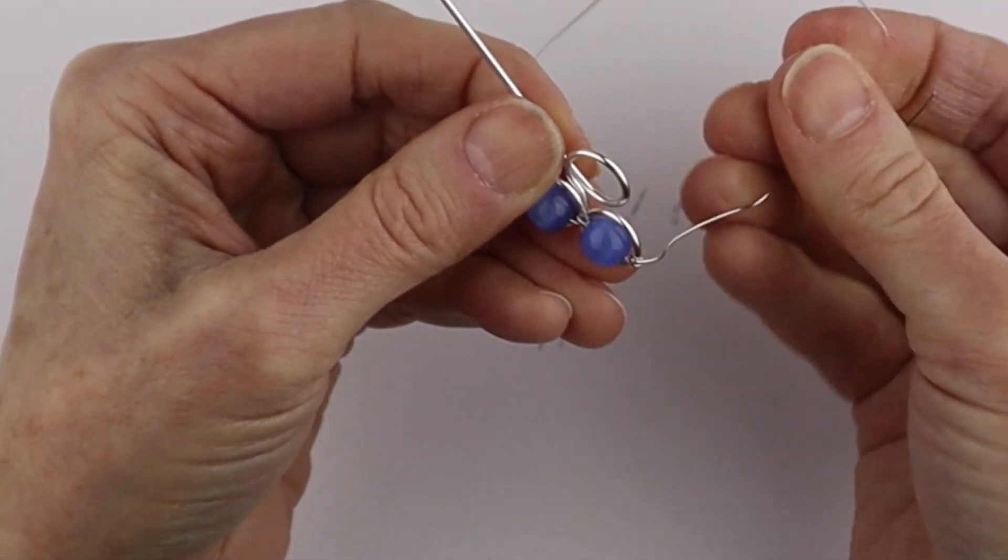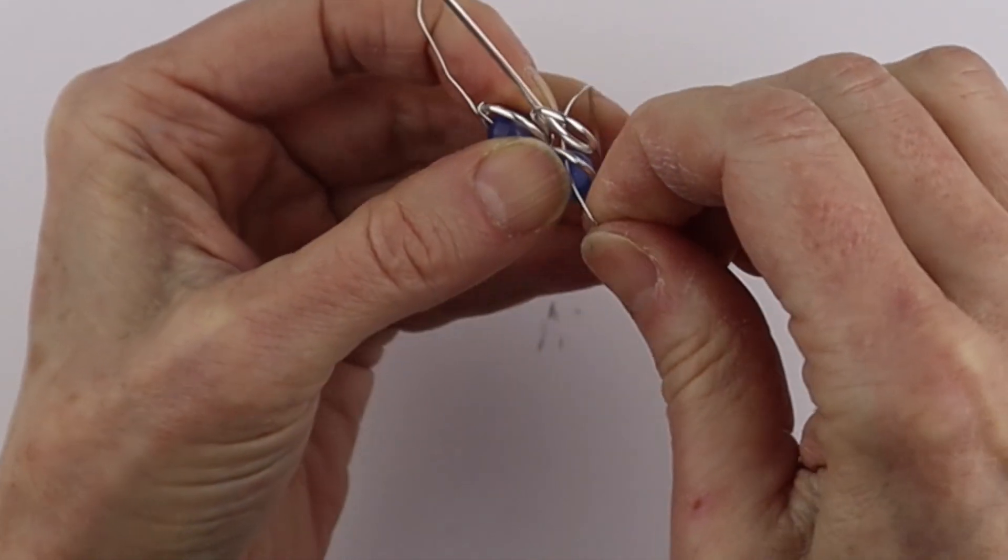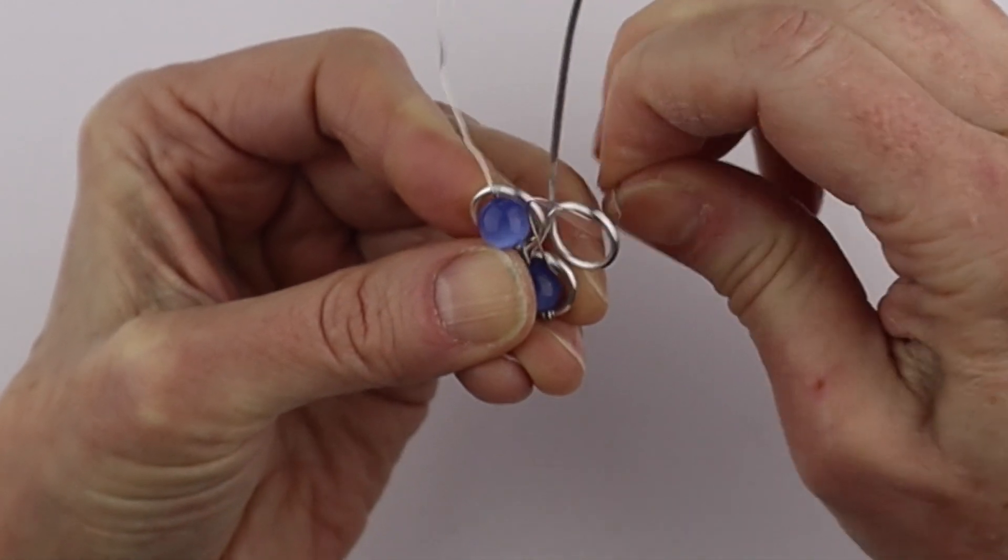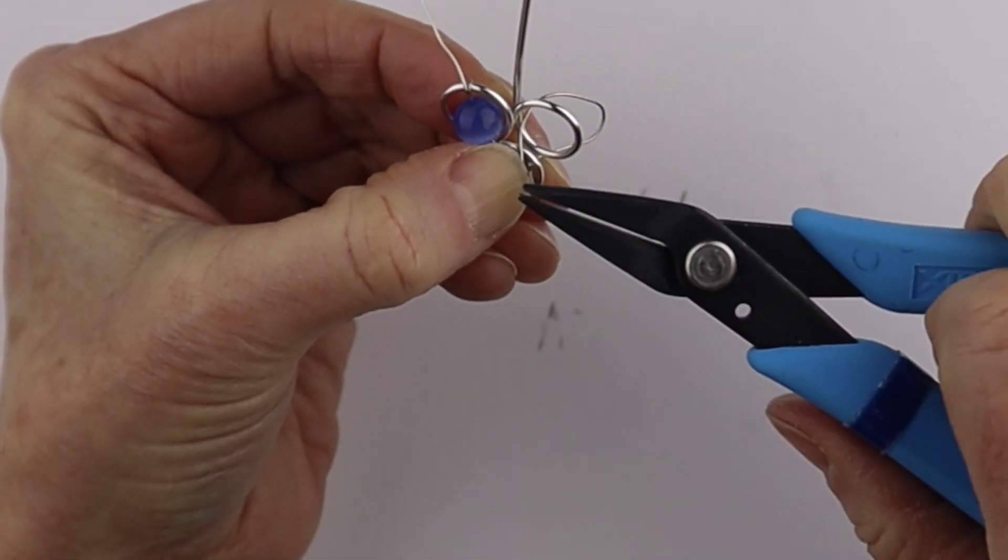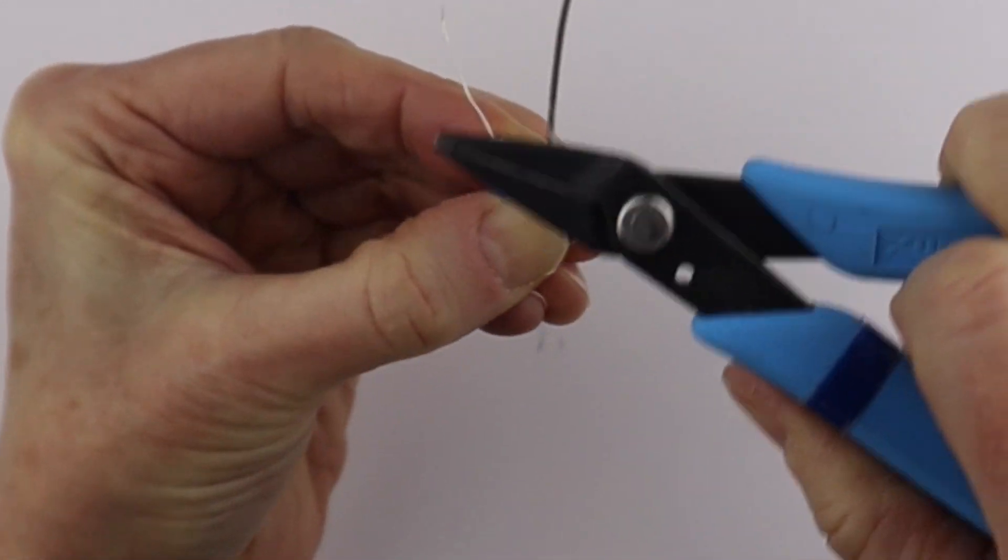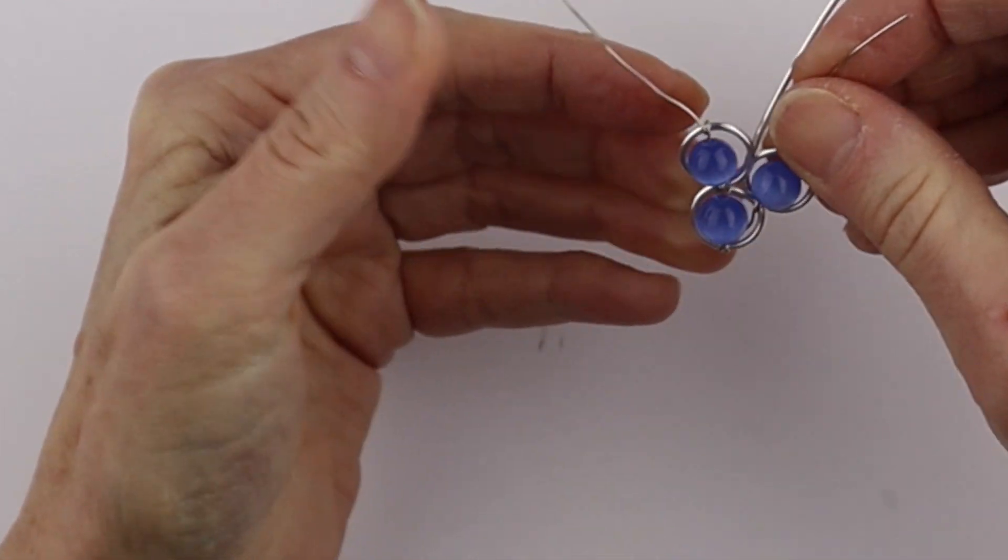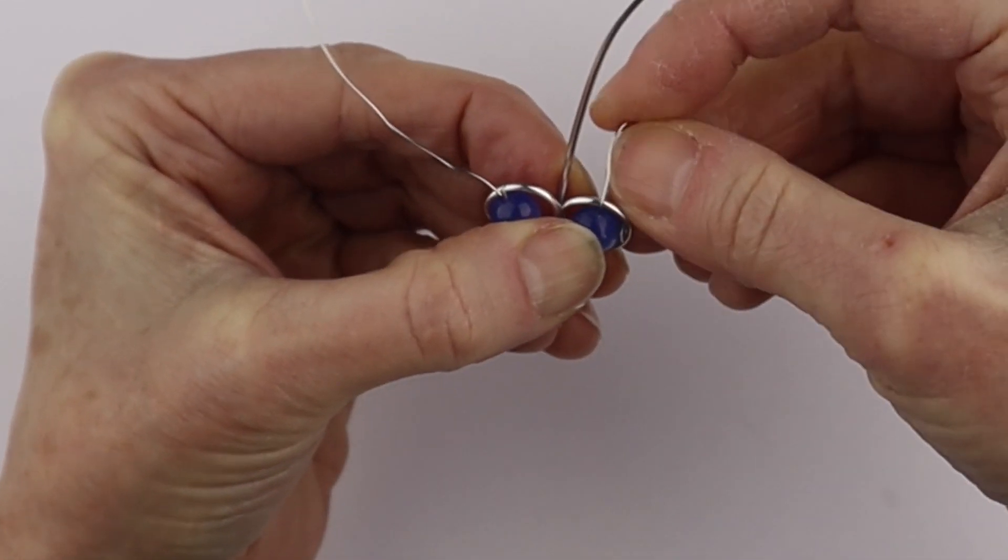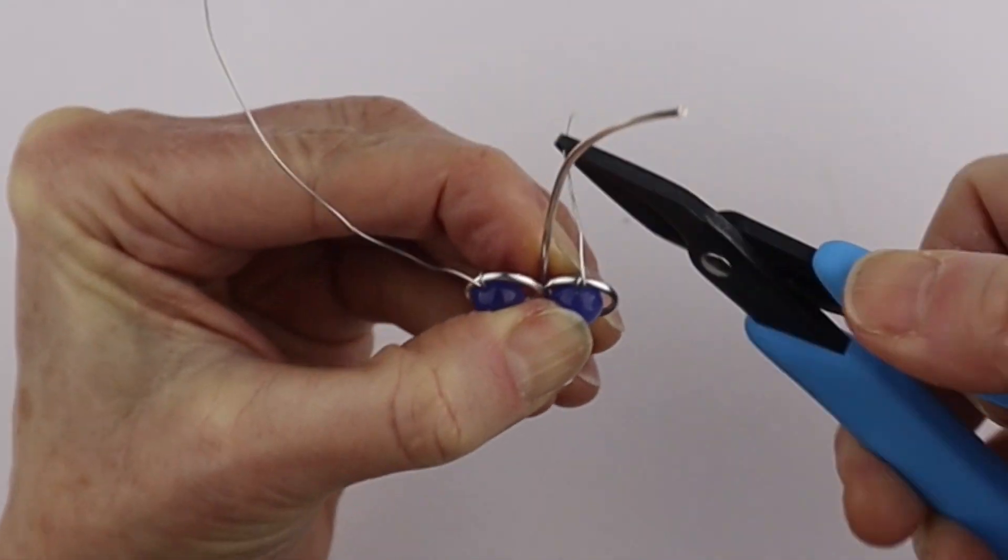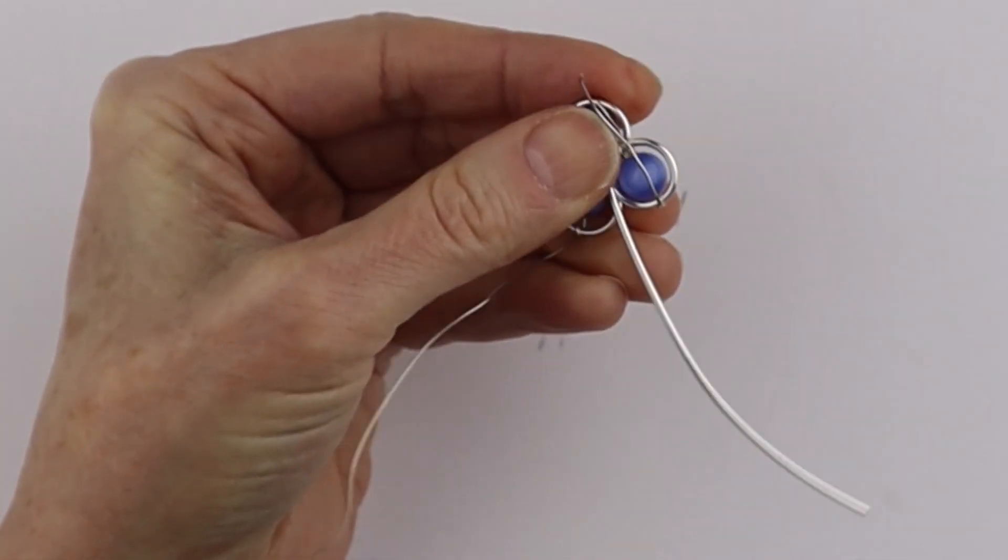And then this wire we can bring over to here. Bring it up through the back here, push it down in here, bring it up in here. Take your flat pliers if you need to just to pull it. Put the other bead on there, bring it across here. And push it through.